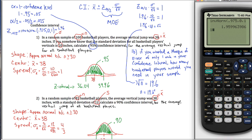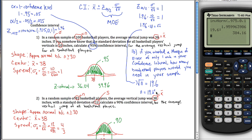I can figure that out on my calculator — it's a little less than 400. 19.6 squared is 384.16. So we get N equals 384.16, meaning we need 385 players.